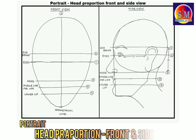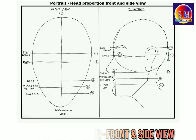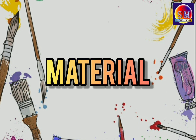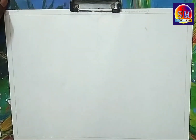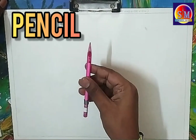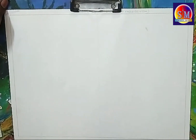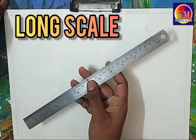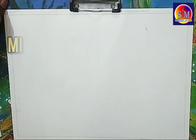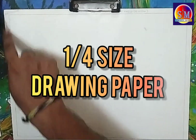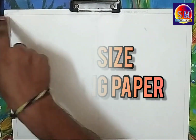Today's topic is portrait head proportion from the front view and side view. The materials required for the drawing are: pencil, eraser, long scale, black micro-tip pen, and A4 size drawing paper.